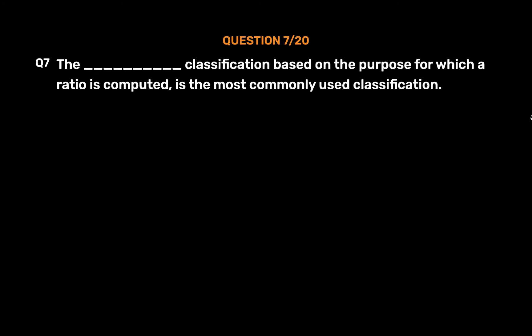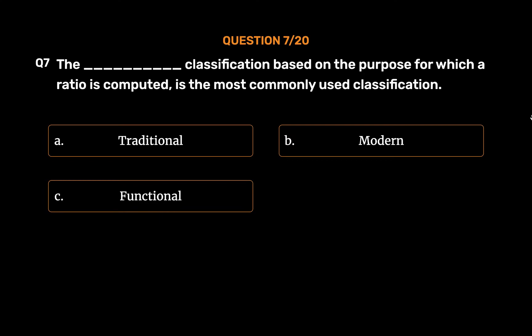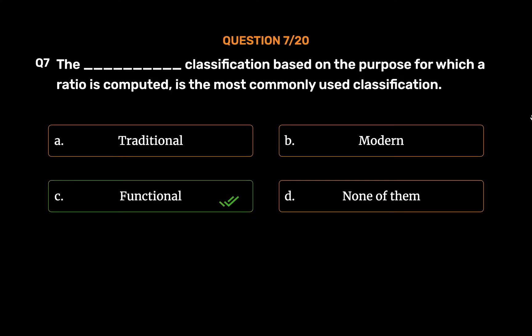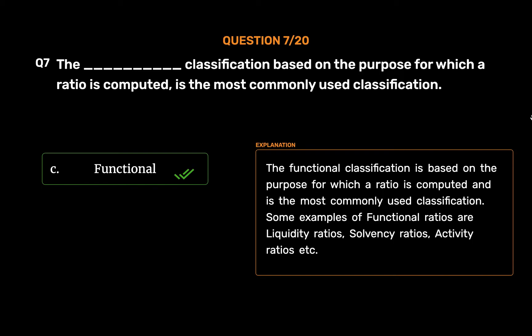Question number 7. The classification based on the purpose for which a ratio is computed is the most commonly used classification. Option A: Traditional. Option B: Modern. Option C: Functional. Option D: None of them. The correct answer is Option C: Functional. The functional classification is based on the purpose for which a ratio is computed and is the most commonly used classification. Some examples are liquidity ratios, solvency ratios, and activity ratios.